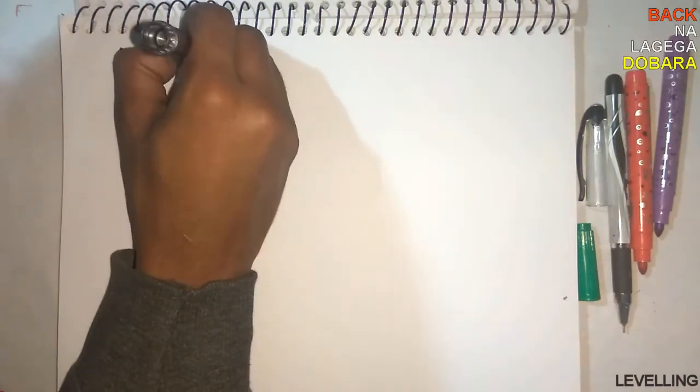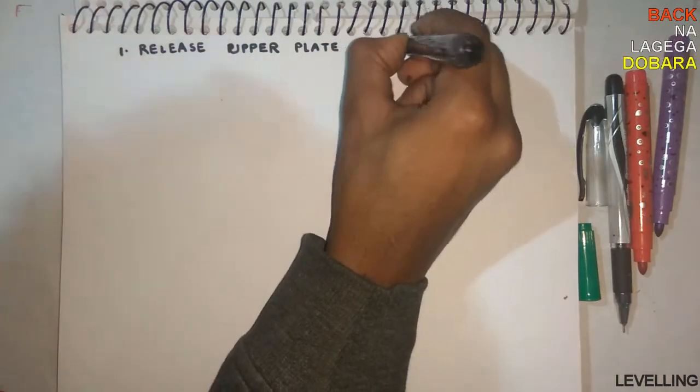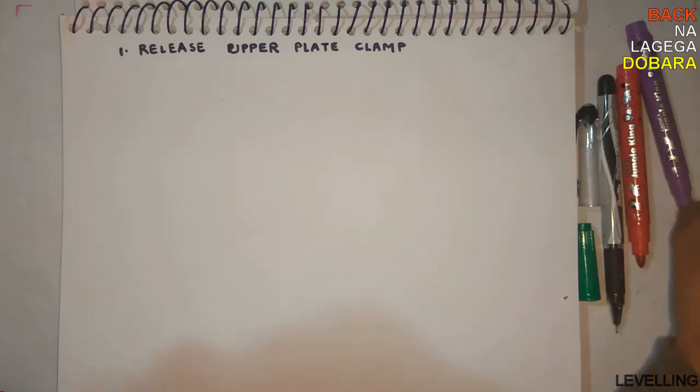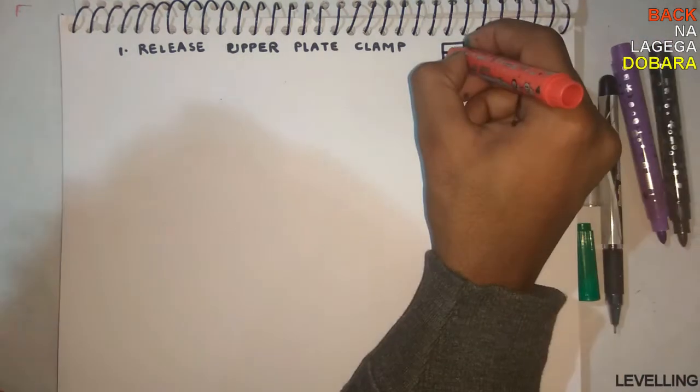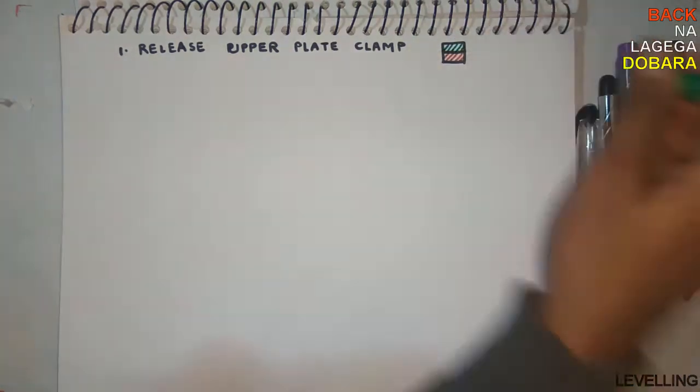Let's see how to level an instrument. First, release the upper plate clamp. This means you will fix the lower one while the upper one will move.